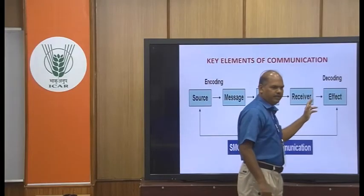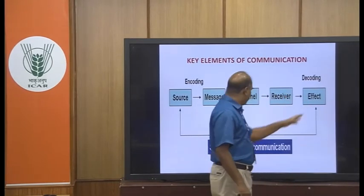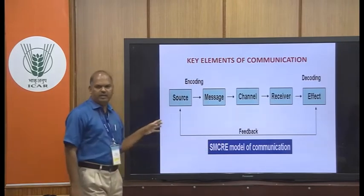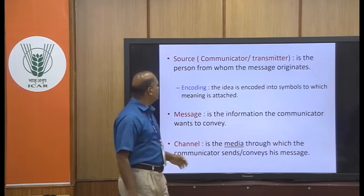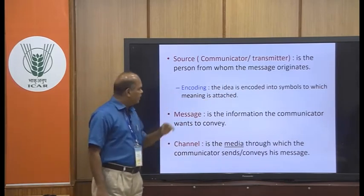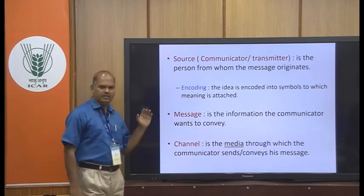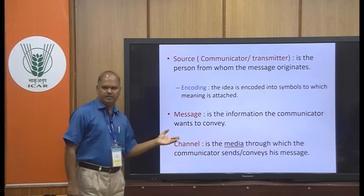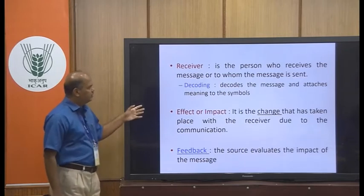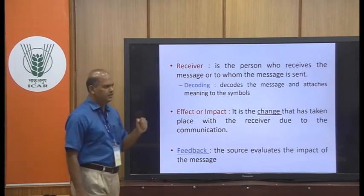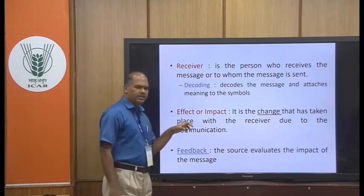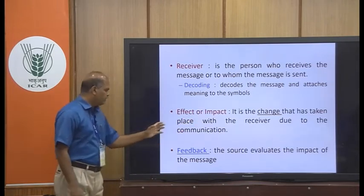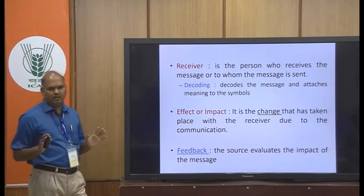In between that, decoding is coming. Decoding is the part where the message is decoded. Finally, the feedback — feedback is very very important for effective communication and the learning process. A source is otherwise known as communicator or transmitter — the person from whom the message originates. Then encoding, then message — the message is the information the communicator wants to communicate. Then the channel is the media for passing the message. Then the receiver is the person who receives the message, to whom the message is sent. Then the impact — it is the changes that have taken place within the receiver due to the communication. Finally, the feedback. This is the SMCR model of communication channels.